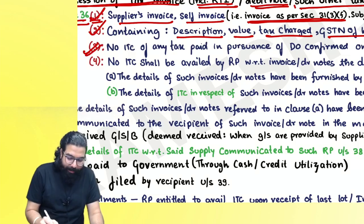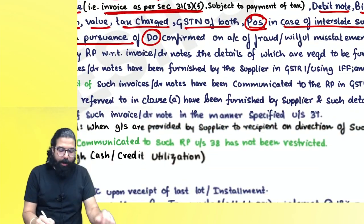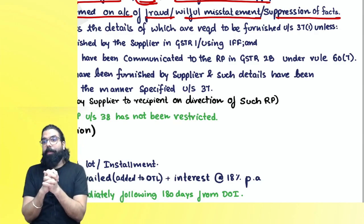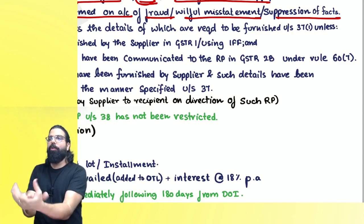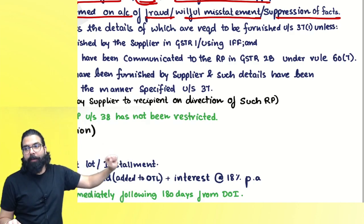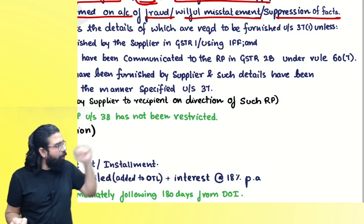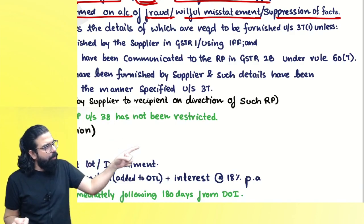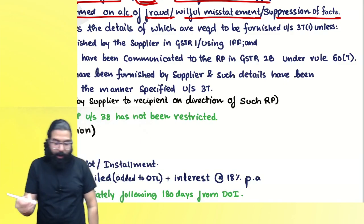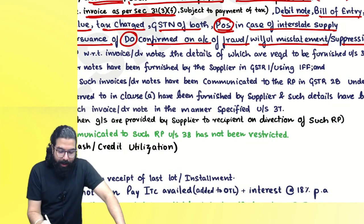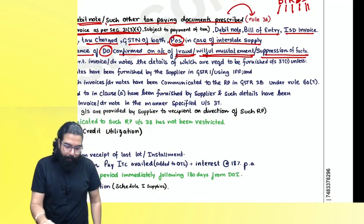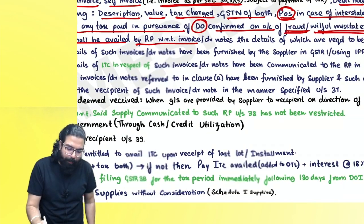Next condition: no ITC of any tax paid in pursuance of a demand order confirmed on account of fraud, willful misstatement, or suppression of facts. For example, if the department catches you charging 5% instead of 18%, and you try to recover that extra 13% from your buyer, the buyer will not be able to take credit on that amount.